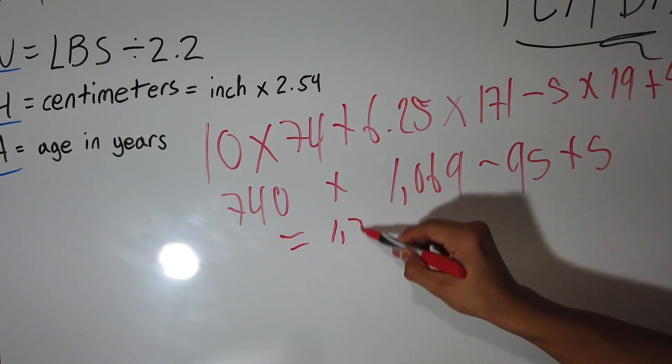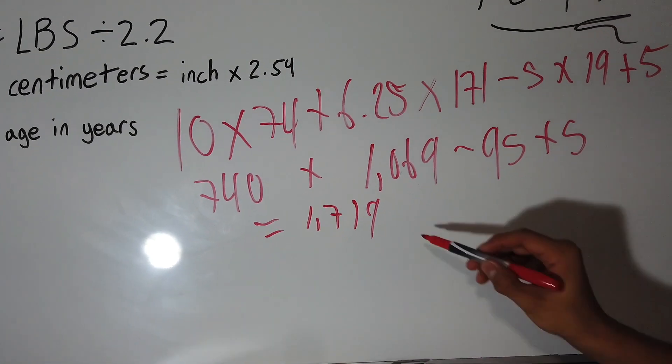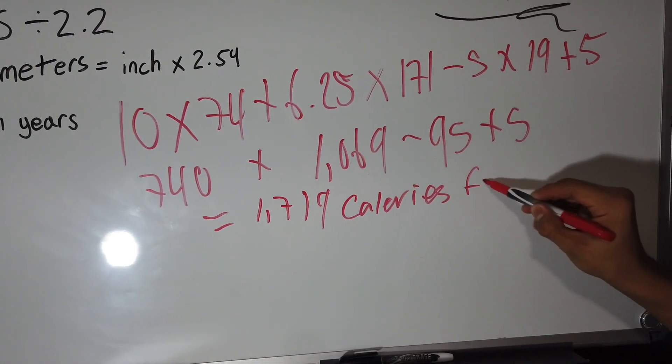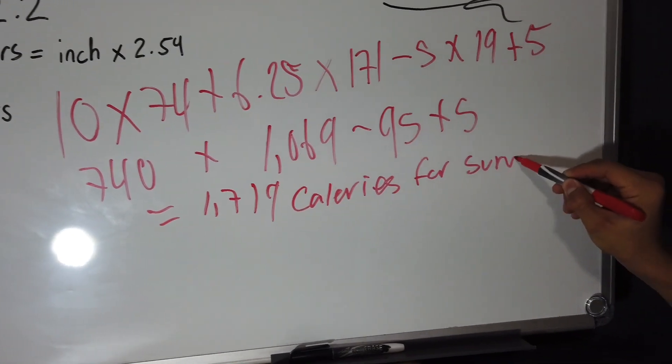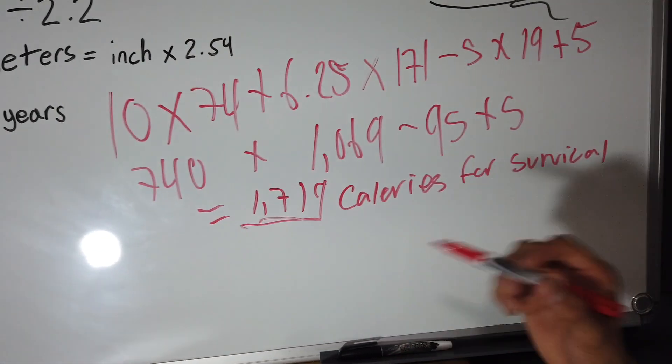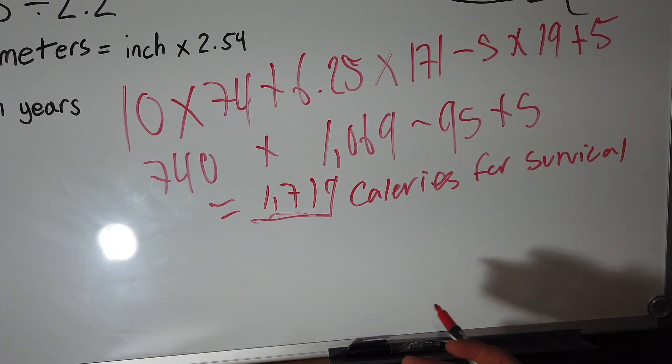And this is just the calories your body needs for survival. So these are the amount of calories your body needs in order for your organs, your muscle, and just for your body just to function.